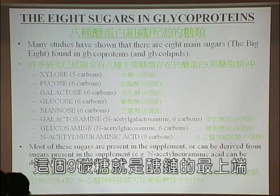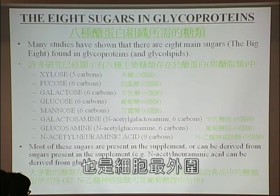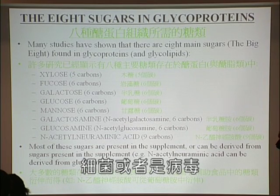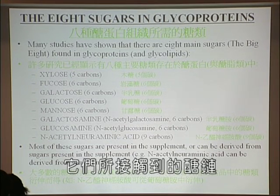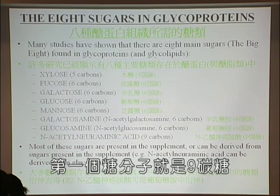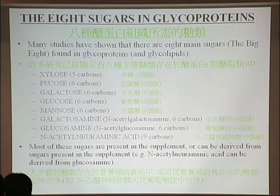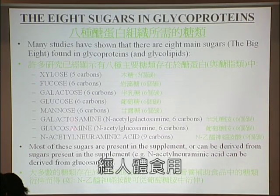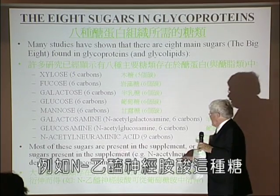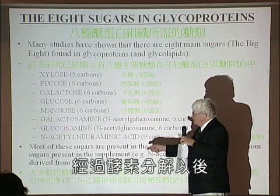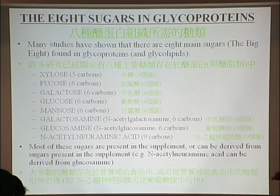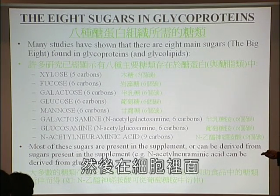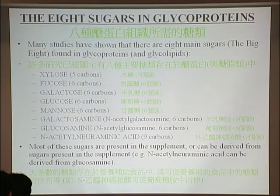When a molecule — whether a hormone, a drug, a bacterium, a virus, or some other molecule — approaches a human cell, very often the first molecule it meets is N-acetylneuraminic acid at the end of a sugar chain. Most of these sugars are present in Ambritos, or they can be made from the sugars present in Ambritos; for example, N-acetylneuraminic acid is made from glucosamine by enzymes in human cells. So Ambritos provides these glyconutrients, which are taken up and built up inside cells into the sugar chains of glycoproteins.